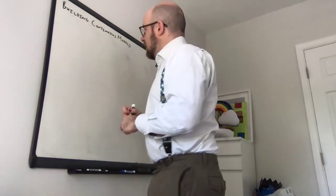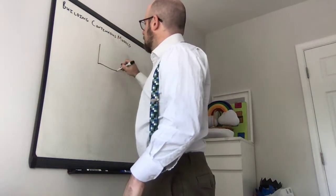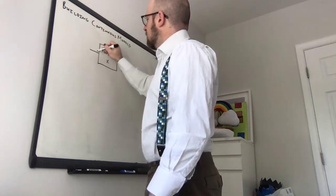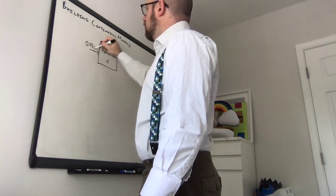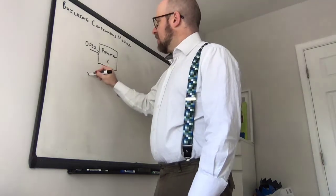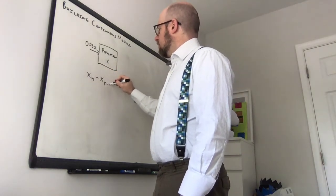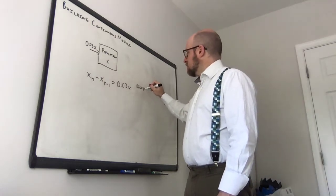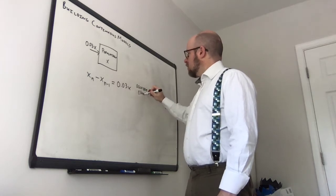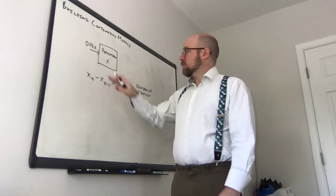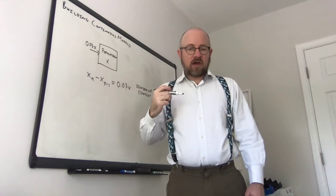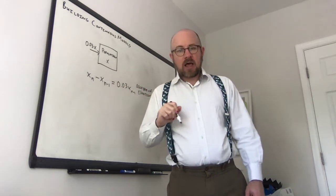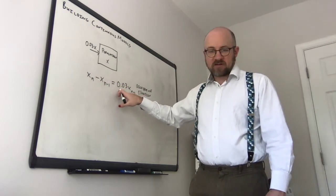For example, if you were given a compartmental diagram modeling population where the variable is x, and we had as input 0.03x, remember we modeled this as x sub n minus x sub n minus 1 equals 0.03x. What we saw in this particular case is that each time we go to the next step, we multiply by 1.03, because x sub n equals x sub n minus 1 plus 0.03 times x sub n minus 1, giving us 1.03.